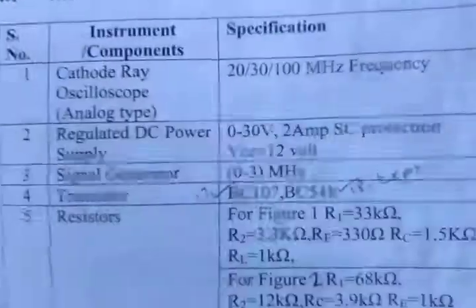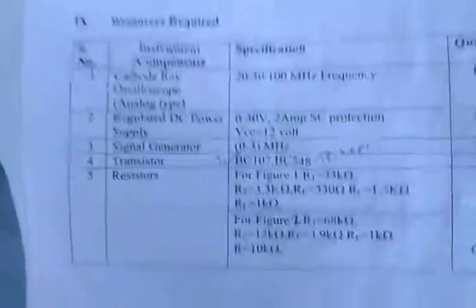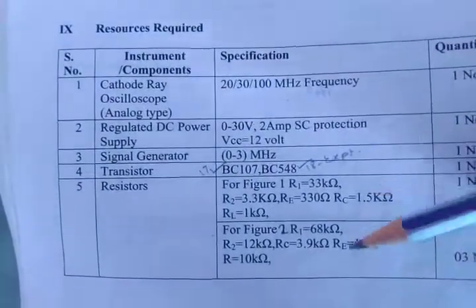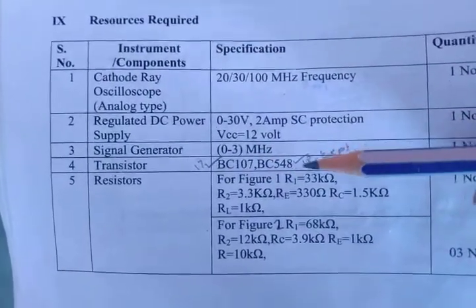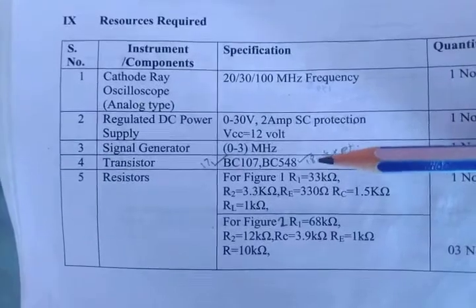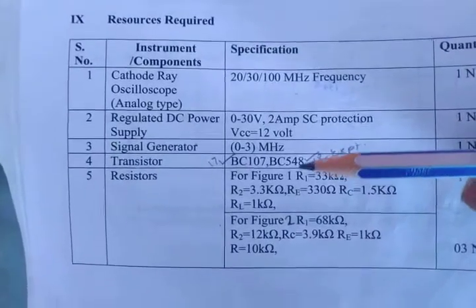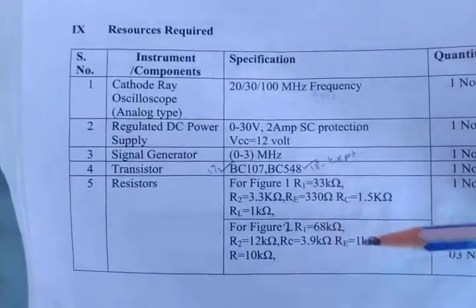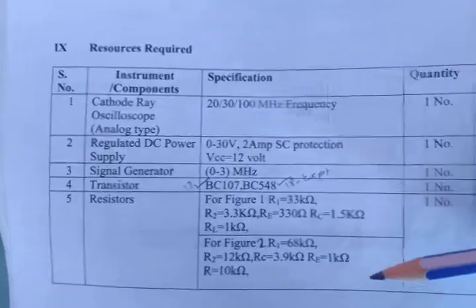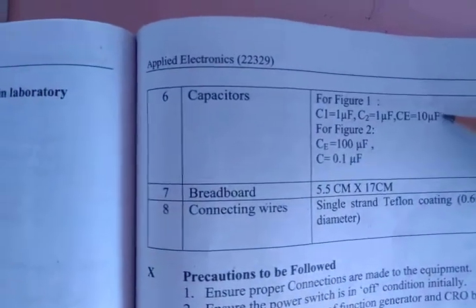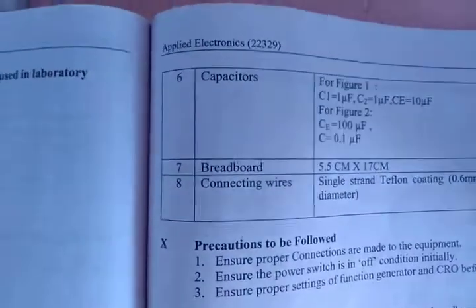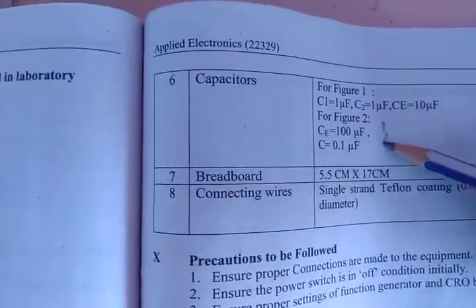This circuit has been implemented using the components shown in the tabular form. For experiment number 17, BC107 was used, and for experiment 18, BC548 is used. The table lists the resistors and capacitors with their values for the 18th experiment.